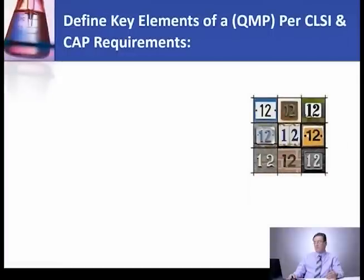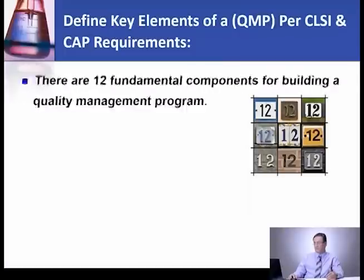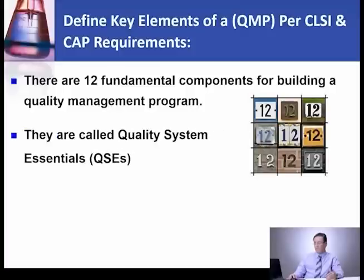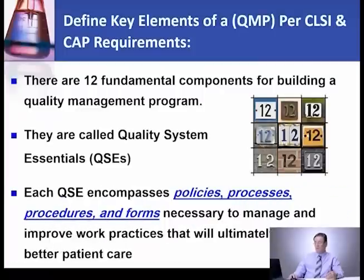Let's define the key elements of the QMP per CLSI and CAP requirements. There are 12 fundamental components for building a quality management program — they are called quality system essentials, or QSEs. Each QSE consists of policies, processes, procedures, and forms. Each one of these elements could have more than one policy, procedure, or form.